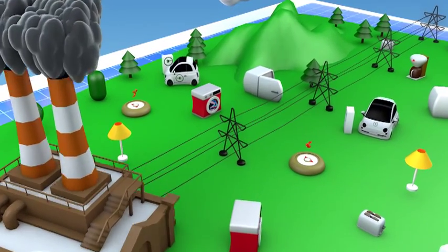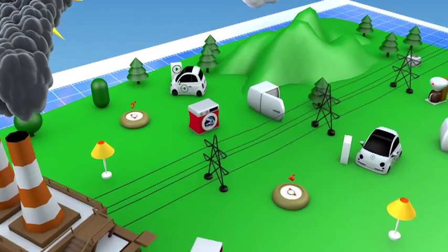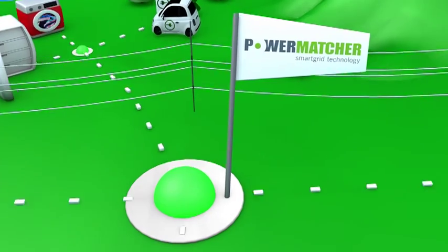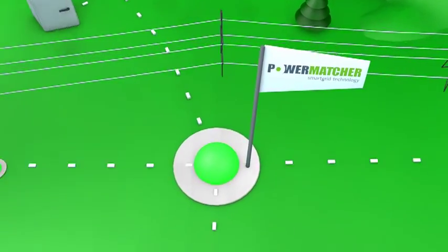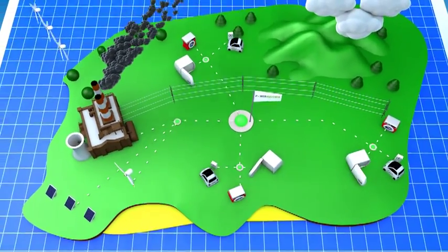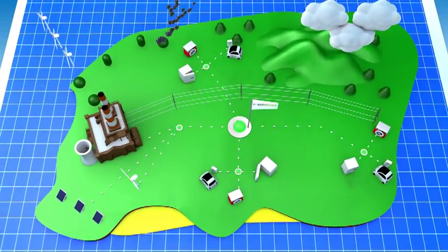But if we can't control the supply, why not adjust the demand? PowerMatcher brings demand in balance with the fluctuating supply of sustainable energy and reduces peaks in the grid when needed.